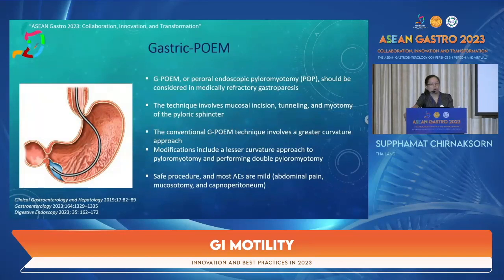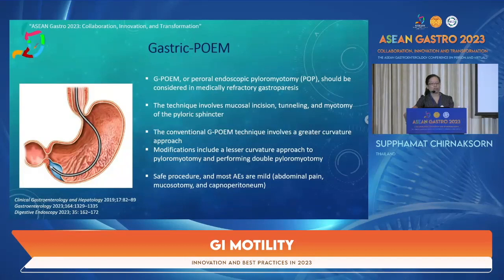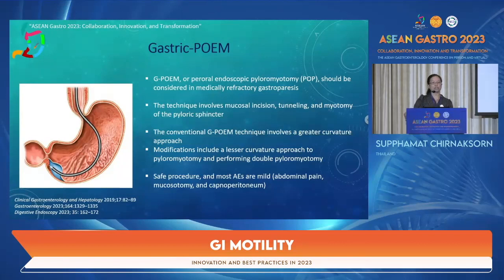Gastric POEM — per oral endoscopic pyloromyotomy — should be considered in medically refractory gastroparesis. The technique involves mucosal incision, tunneling, and myotomy of the pyloric sphincter. EndoFLIP can be used before and after the procedure to assess treatment outcome. The conventional G-POEM technique uses a greater curvature approach, but a modification approaching the lesser curvature with double pyloromyotomy is also available. The most common adverse events include abdominal pain, mucosal injury, and capnoperitoneum.